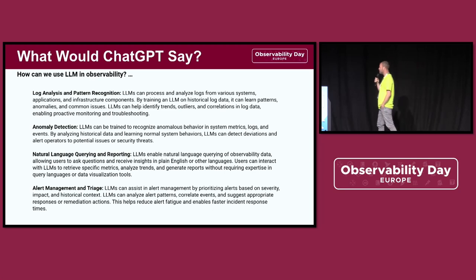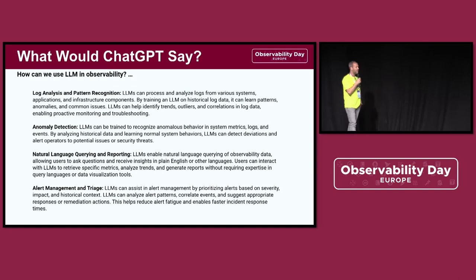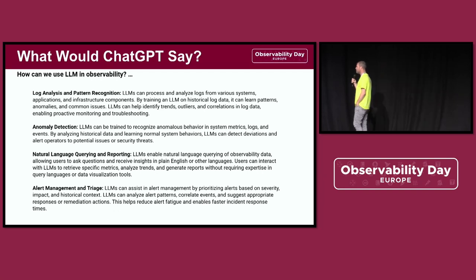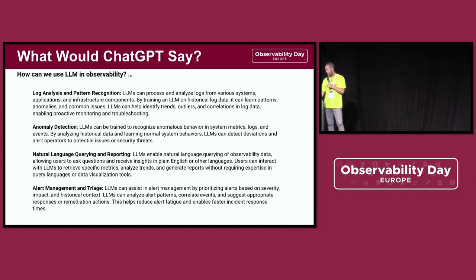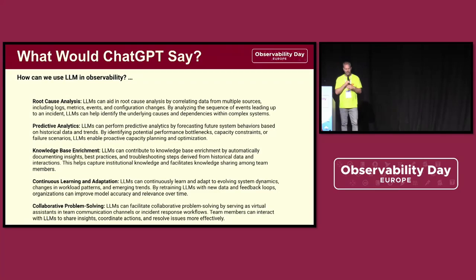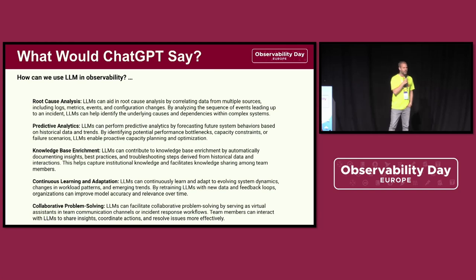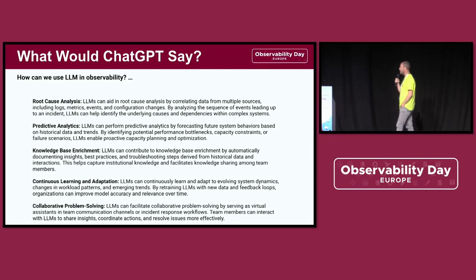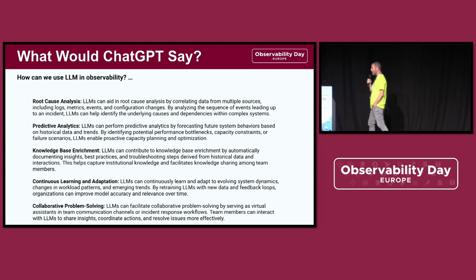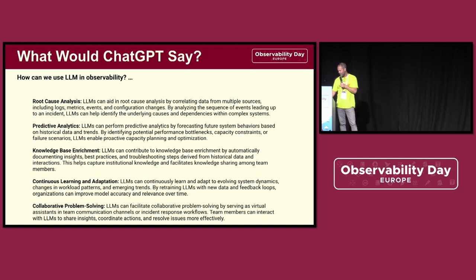ChatGPT suggested doing analysis about log analytics, pattern recognition, and anomaly detection from metrics, logs, and traces. It also suggested natural language querying and reporting — a very good use case for LLMs — as well as alert management and triage, the ability to communicate directly with people around alerting. Other topics included root cause analysis, predictive analytics, knowledge base enrichment, and various other ways to use LLMs in observability.